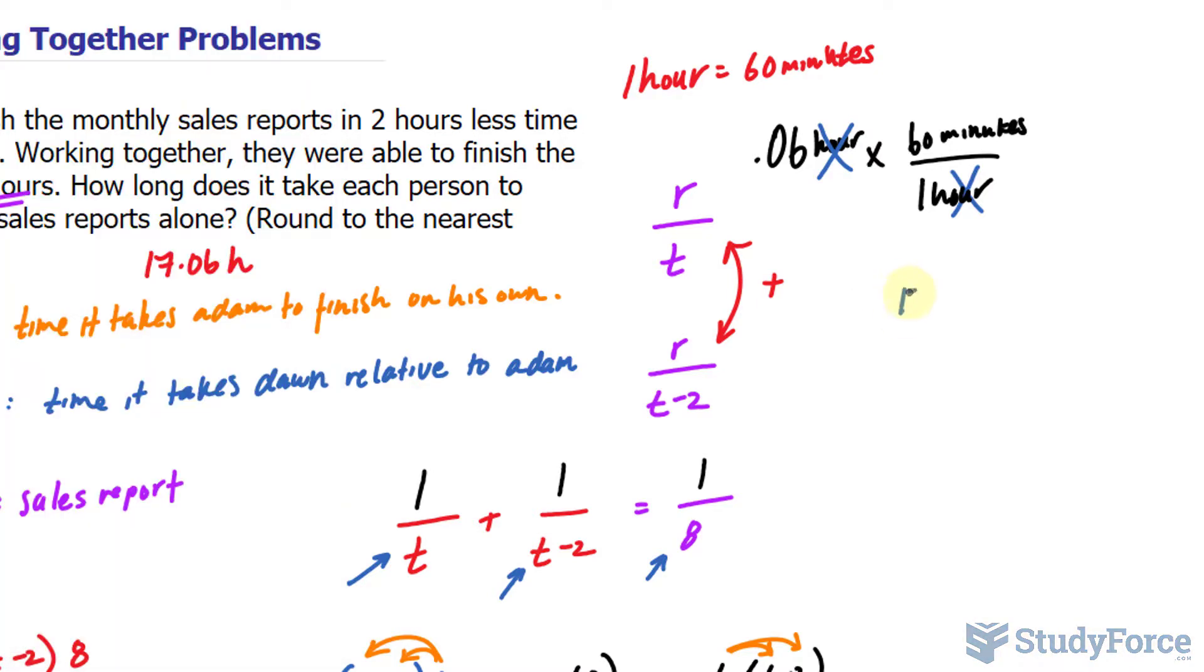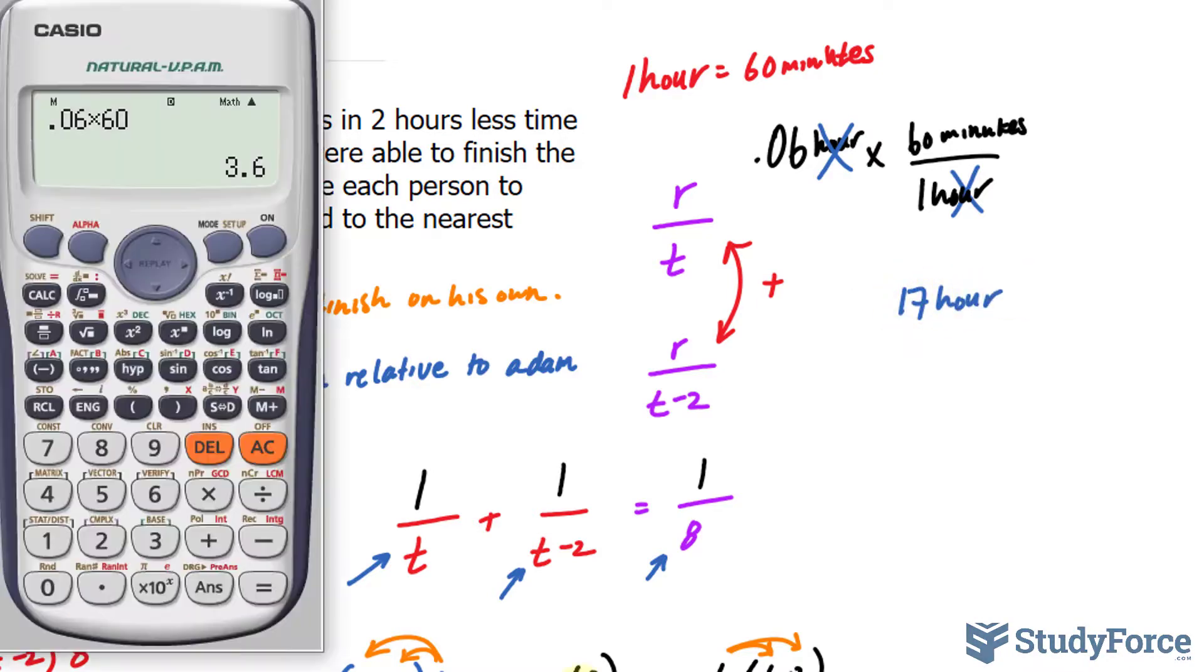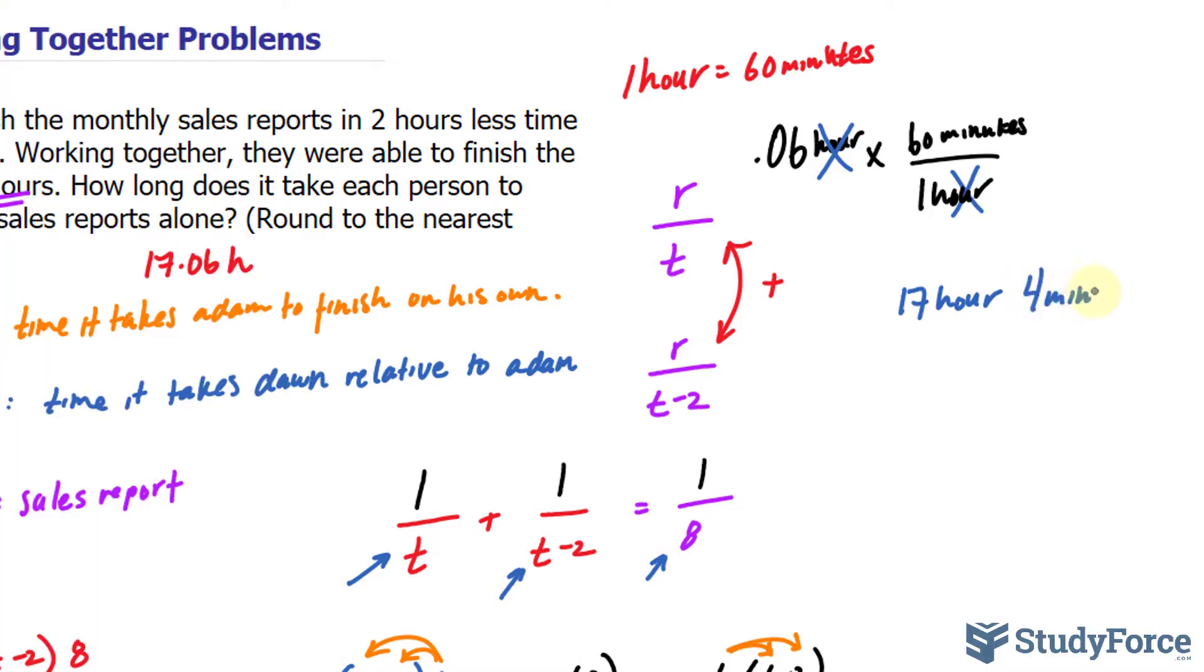So it takes Adam seventeen hours and four minutes, because they want the nearest minute we round up to finish, whereas it takes Dawn fifteen hours and four minutes to subtract two hours from that.